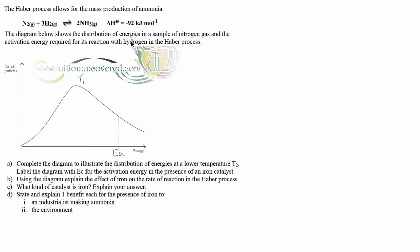Chances are, in the exam, this question may have continued on to talk about reversible reactions. However, today, in this video, I'm just simply addressing the Boltzmann distribution part of the syllabus. So you've got distribution curve, T1, activation energy marked, part A, complete the diagram to illustrate the distribution of energies at a lower, not higher, lower temperature T2. Label the diagram with EC for the activation energy in the presence of an iron catalyst. So using the example of the Haber process, they're trying to test a few different things.